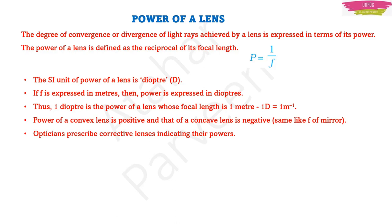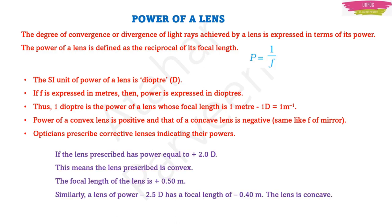Opticians prescribe corrective lenses by indicating their powers. For example, a lens with power +2 diopter is a convex lens with focal length 1/2 = 0.5 meter. A lens with power −2.5 diopter is a concave lens with focal length 1/2.5 = 0.4 meter. Because the power is negative, the lens is concave.